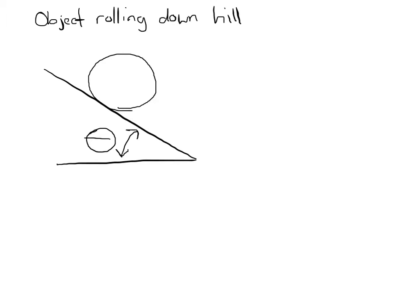This is our second example of rotational motion when we're worried about torques, and that is an object rolling down a hill. The first example was the last video — the pulley with a weight hanging from it — where we calculated torque and from that, angular acceleration.